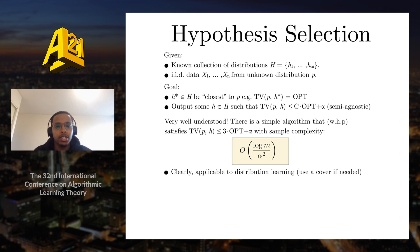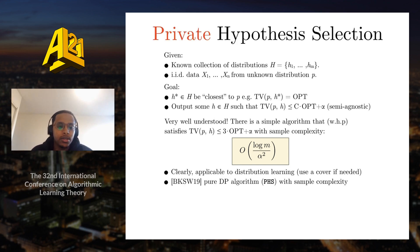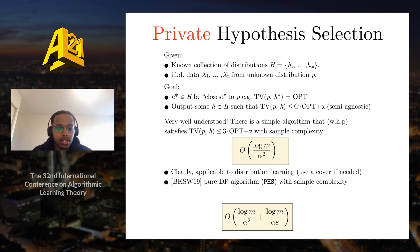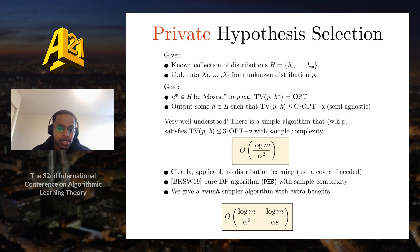Hypothesis selection is applicable to distribution learning by taking H to be our class or a cover for it. In private hypothesis selection, we want to respect differential privacy. Bun, Kamath, Steinke, and Wu gave a pure differentially private algorithm called PHS with sample complexity also growing logarithmically in the number of hypotheses. In our paper, we give a much simpler algorithm than PHS that has additional benefits with the same sample complexity.